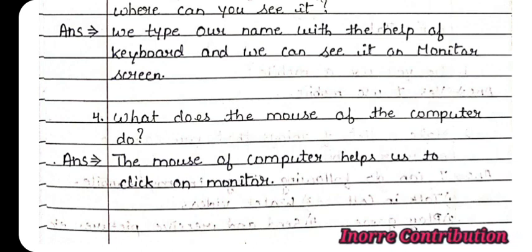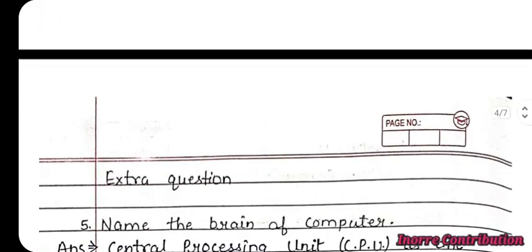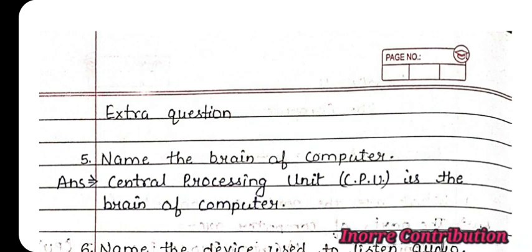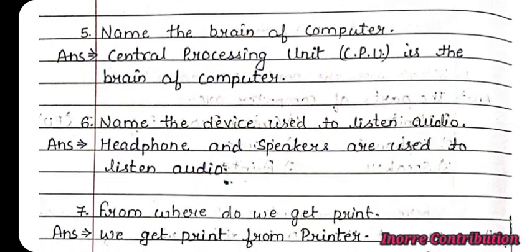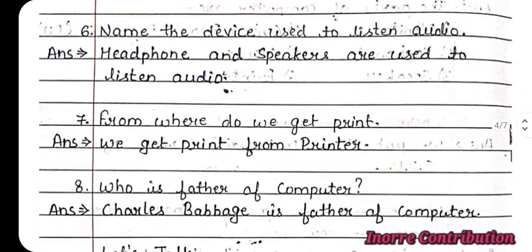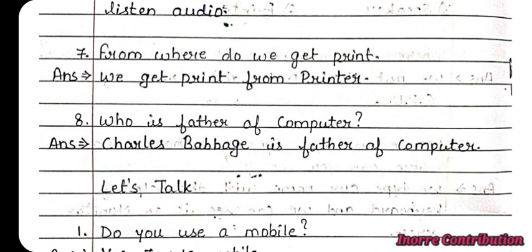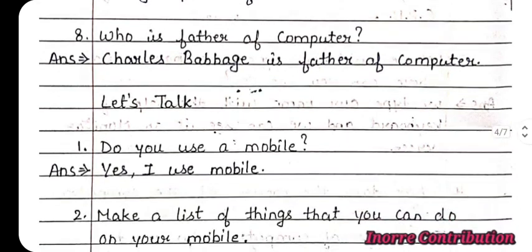Next question: What does the mouse of the computer do? Answer: The mouse of the computer helps us to click on the monitor. Extra questions: Name the brain of the computer. Answer: Central Processing Unit (CPU) is the brain of the computer. Name the device used to listen to audio. Answer: Headphones and speakers are used to listen to audio. From where do we get a print? Answer: We get print from the printer. Who is the father of the computer? Answer: Charles Babbage is the father of the computer.